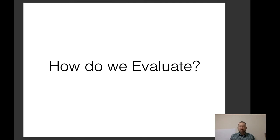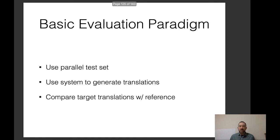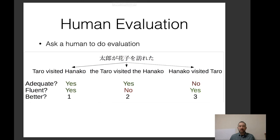A final very important question: now that we have these models, how do we evaluate them? The basic evaluation paradigm is we train our model on a training set, then have a test set containing parallel input-output pairs — for translation, input in one language and output in another; summarization, a document and shorter text; image captioning, images and descriptions. We use the system to generate outputs and compare them with a reference.